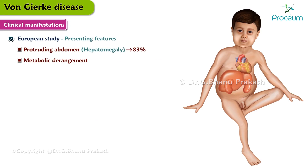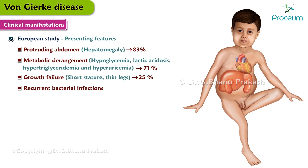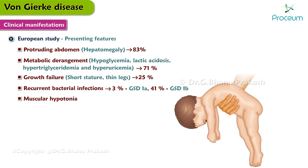Metabolic derangements including hypoglycemia, lactic acidosis, hypertriglyceridemia, and hyperuricemia were all found in 71% of cases. Growth failure, such as short stature or thin legs, was found in 25% of cases. Recurrent bacterial infections were present with different percentages based on the type: 3% in GSD-1A and 41% in GSD-1B. Muscular hypotonia was present in 13% of all cases.